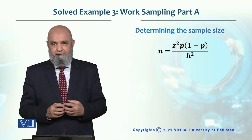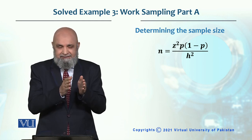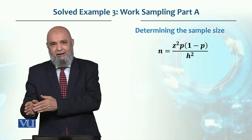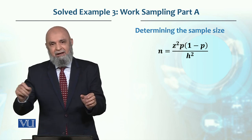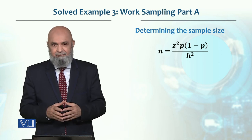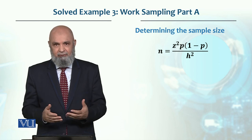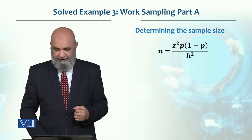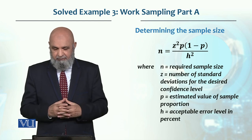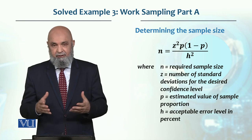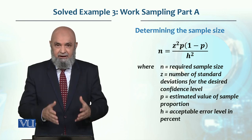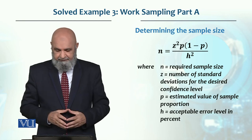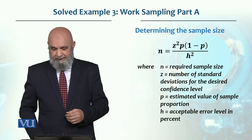P is the proportion — we are looking at 25%, meaning 25% workers are idle and 75% are working. So the proportion is 0.25, and (1 - 0.25) gives the remaining value. H squared is accuracy — we said 3% accuracy is needed, so 3% means 0.03, and squaring it gives the value. So in this equation: N is the required sample size, Z is the number of standard deviations for the desired confidence level (given in charts), P is the estimated value of sample proportion — 25% versus 75% — and H is the acceptable error level in percentage.